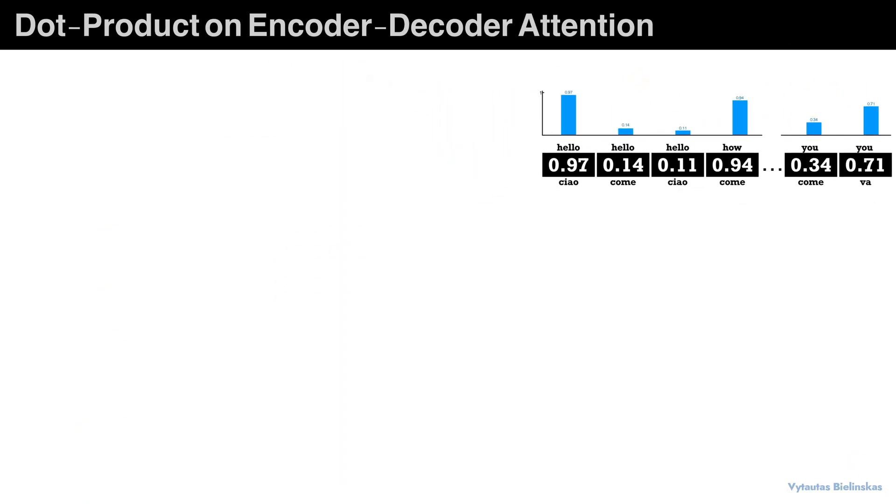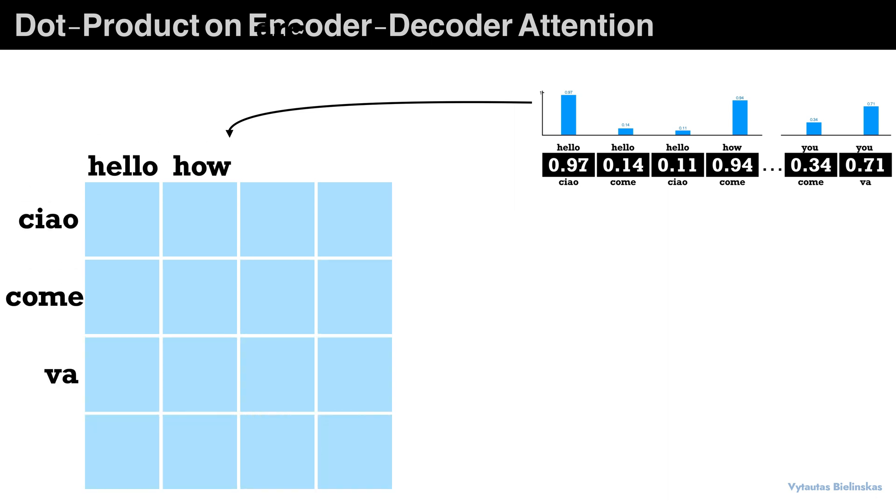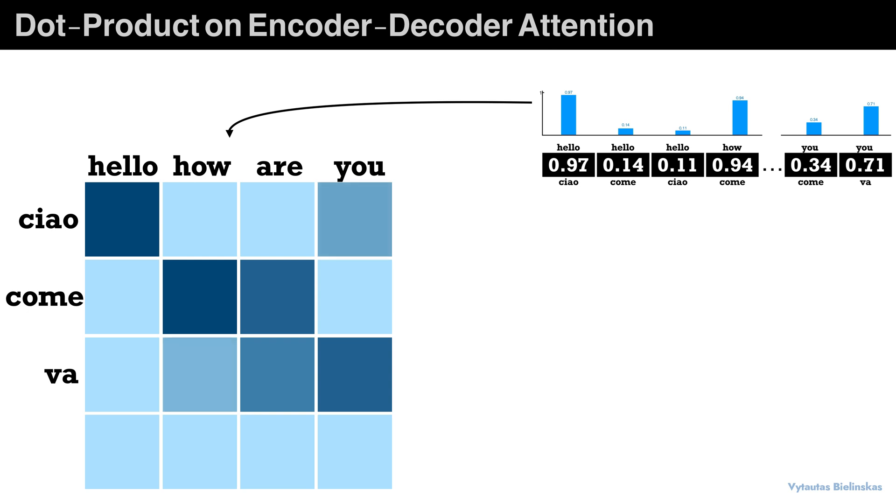And the same logic works for each pair of words. Now we can display this relationship a little bit using a heat map. Here darker blocks mean higher similarity and lighter blocks lower similarity.